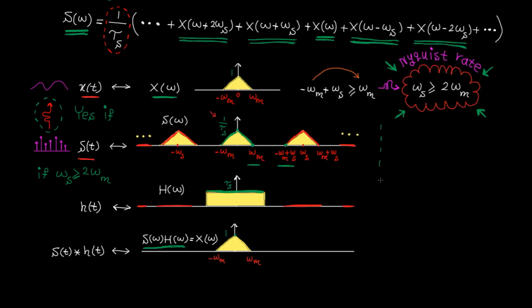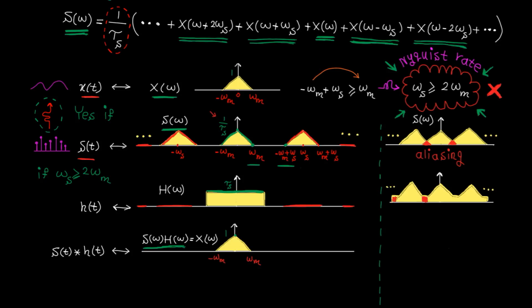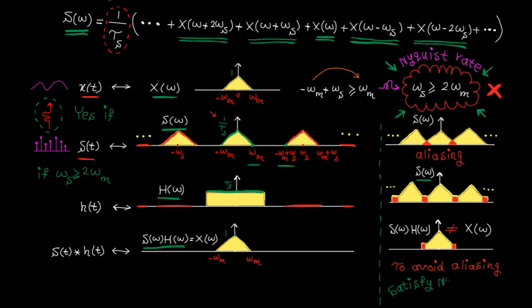Now let's see what happens if the Nyquist rate is violated. When ωs is too small, there is an overlap between neighboring copies of X(ω) in S(ω). This overlap is called aliasing. Due to aliasing, S(ω) becomes distorted when you add up all the copies, and applying the low-pass filter gives you something that is not equal to X(ω) — so remember, to avoid aliasing you must satisfy the Nyquist rate.